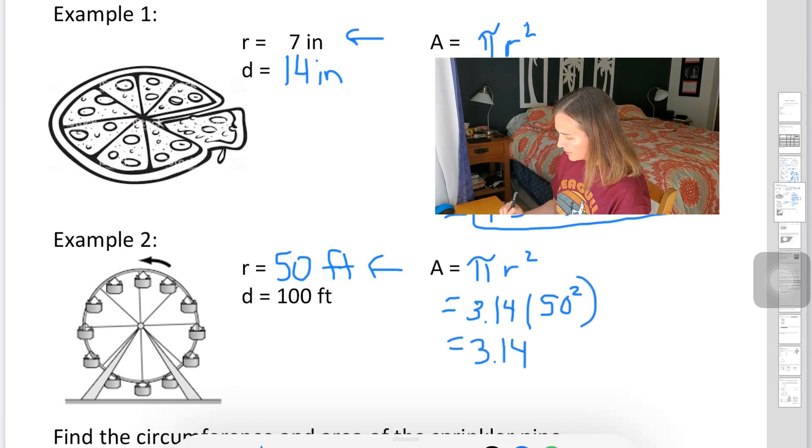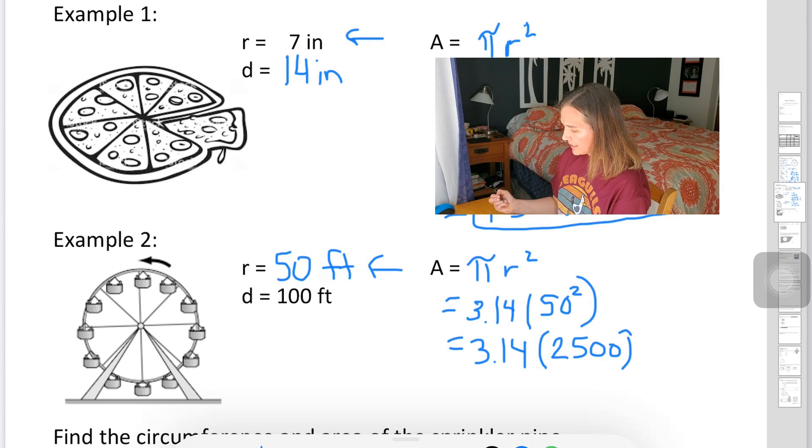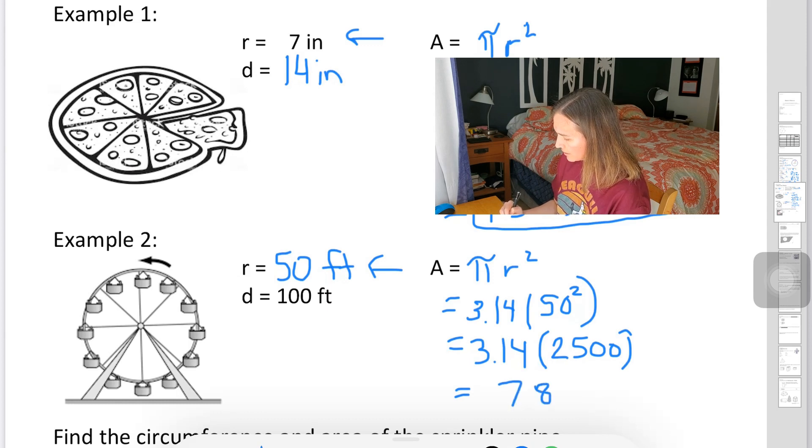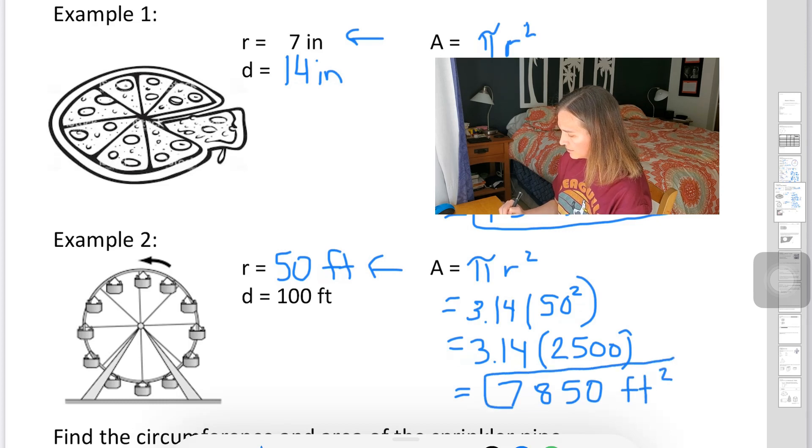Always start by squaring first. So I'm going to do 50 times 50 is 2500. And I'm going to take that and multiply it by 3.14. We end up with the amount of space inside this Ferris wheel is 7850 feet squared. There it is, the area.